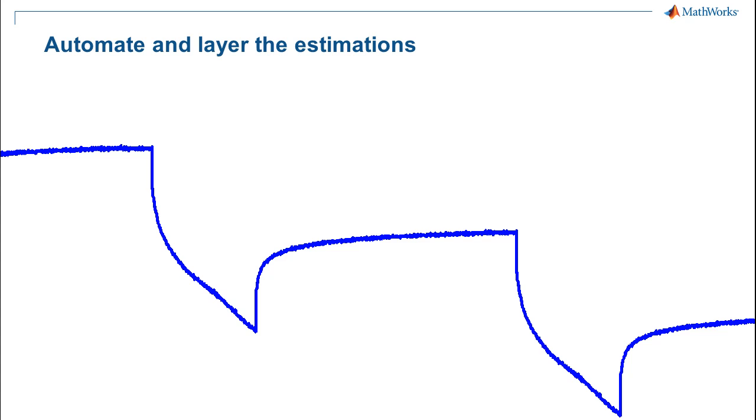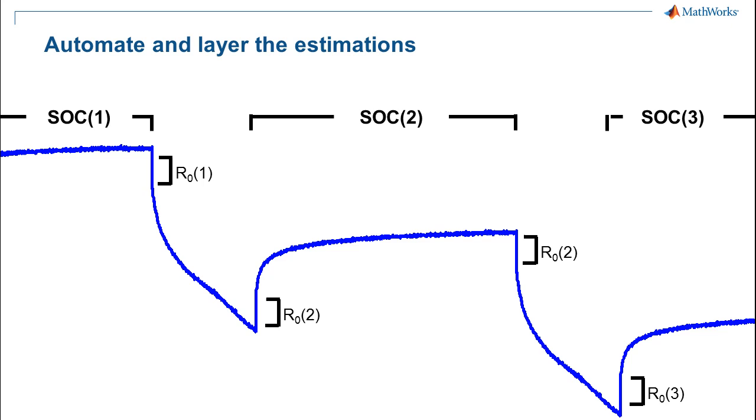However, it's not straightforward where to break up the datasets when you do this. Consider that the SOC has a different but constant value during each relaxation period. However, during the actual discharge pulses, the SOC is changing. Now consider that the terminal resistance R0 controls the instantaneous part of the voltage drop when the current input changes. This value also changes with respect to state of charge. So if you notice, the second value of R0 affects the place right after the first pulse and also at the beginning of the second pulse. We really needed to include both of these data points in any given estimation task to ensure we got the best overall result that was balanced between these different locations.